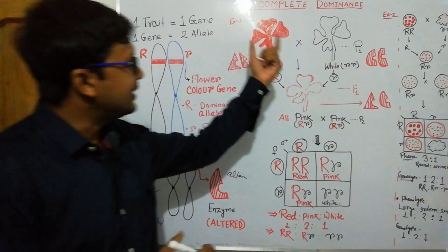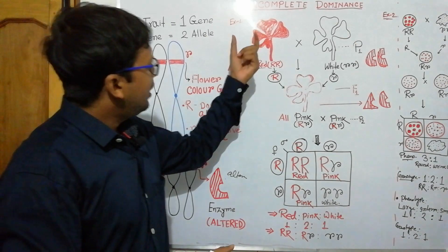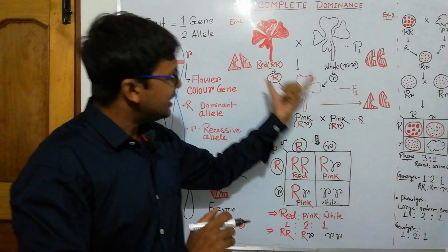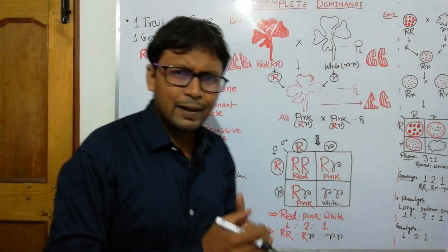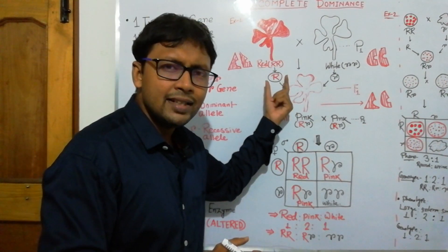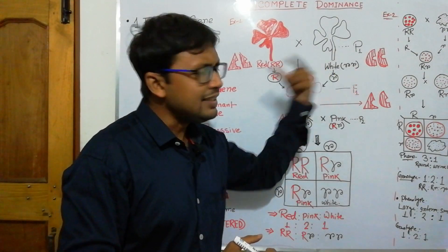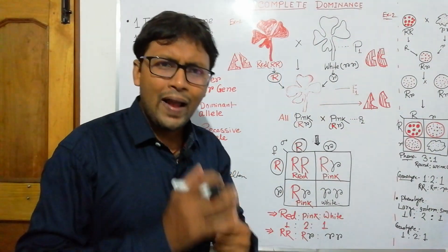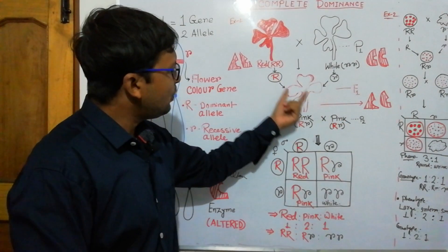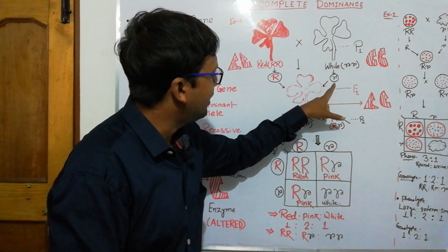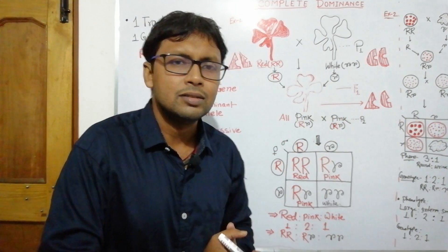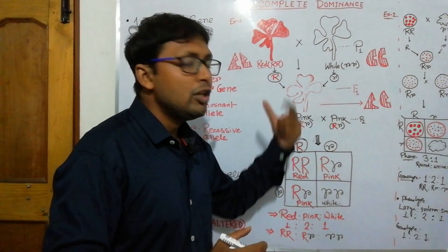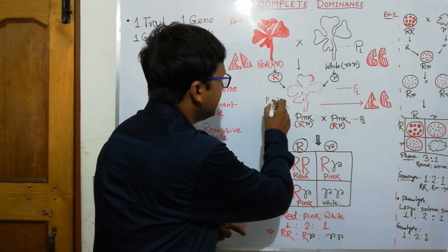A common example is snapdragon. When you cross a red-flowered snapdragon plant with a white-flowered snapdragon plant, the red flower is determined by two dominant alleles and the white flower by two recessive alleles. According to Mendel's rules, all F1 should be red (capital R, small r), but in this case you will see that all F1 are pink. Why pink and not red?